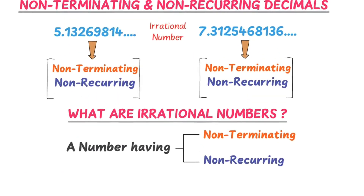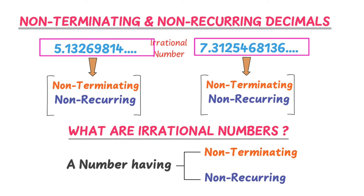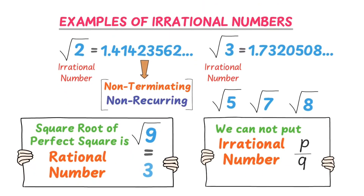To summarize: a non-terminating and non-recurring decimal represents an irrational number. The values of square roots of some numbers are non-terminating and non-recurring decimals, so they are also irrational numbers — like root 2, root 3, root 5, etc. Thirdly, square roots of perfect squares, like root 9 and root 16, are rational numbers. This was all about irrational numbers.